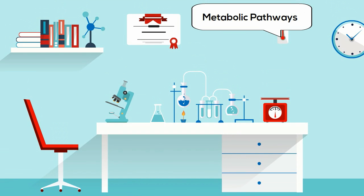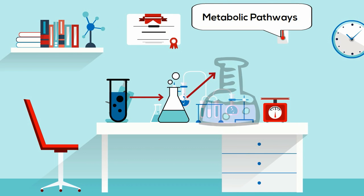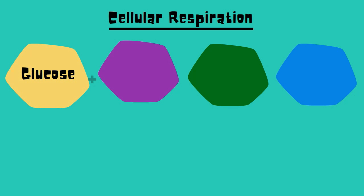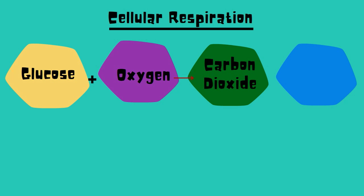These chemical reactions of metabolism can be organized into pathways in which one chemical is transformed through a series of steps into another chemical with the help of enzymes. An example of one of these pathways is cellular respiration, in which glucose and oxygen are transformed into carbon dioxide, water, and ATP, which is used for energy.